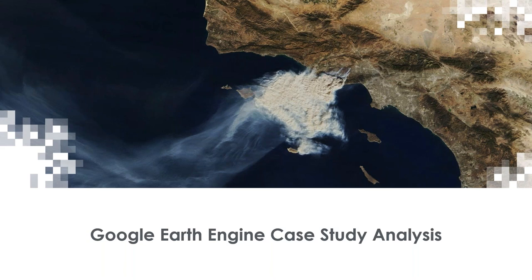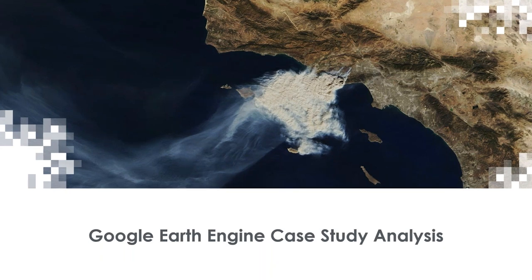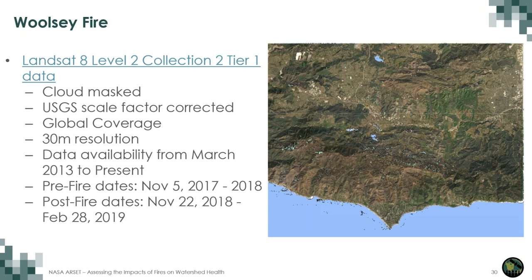We are now going to enter a demonstration of Google Earth Engine led by Brittany. In this session, we're continuing with the Woolsey Fire as our case study and using Google Earth Engine to look at some post-fire impacts. We'll start by using the Landsat 8 Collection 2 dataset, which has global coverage, 30-meter resolution, and data available from March 2013 to present. With this data, we'll start by masking out clouds, applying a scale factor, and filtering our data to pre- and post-fire dates.